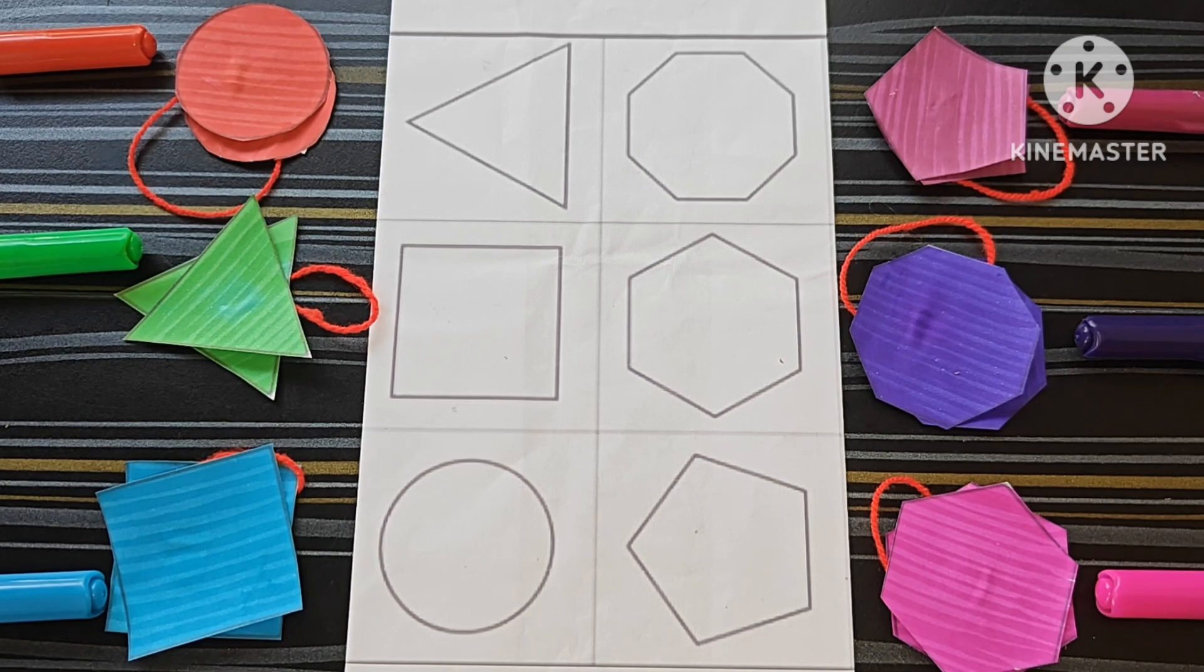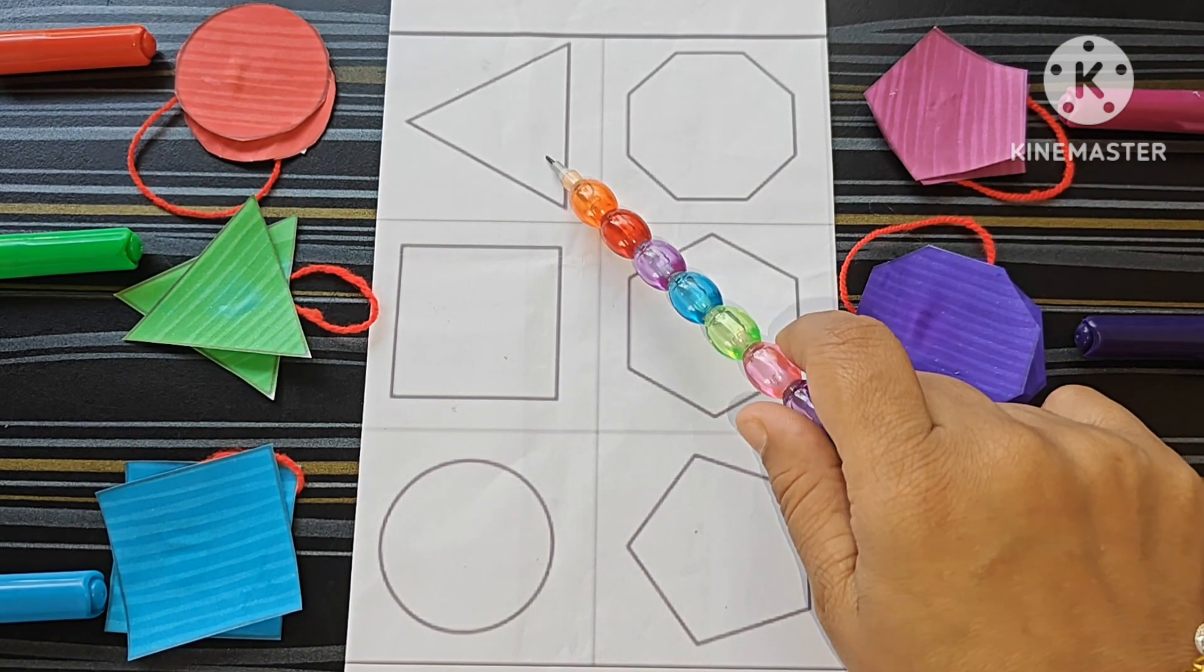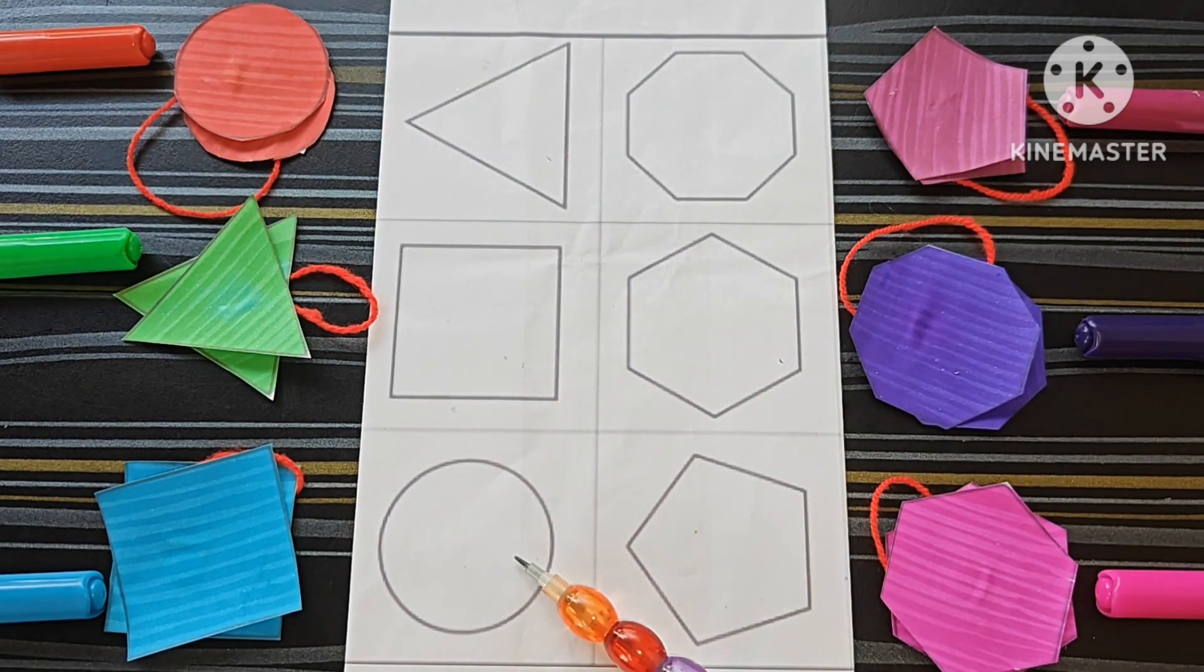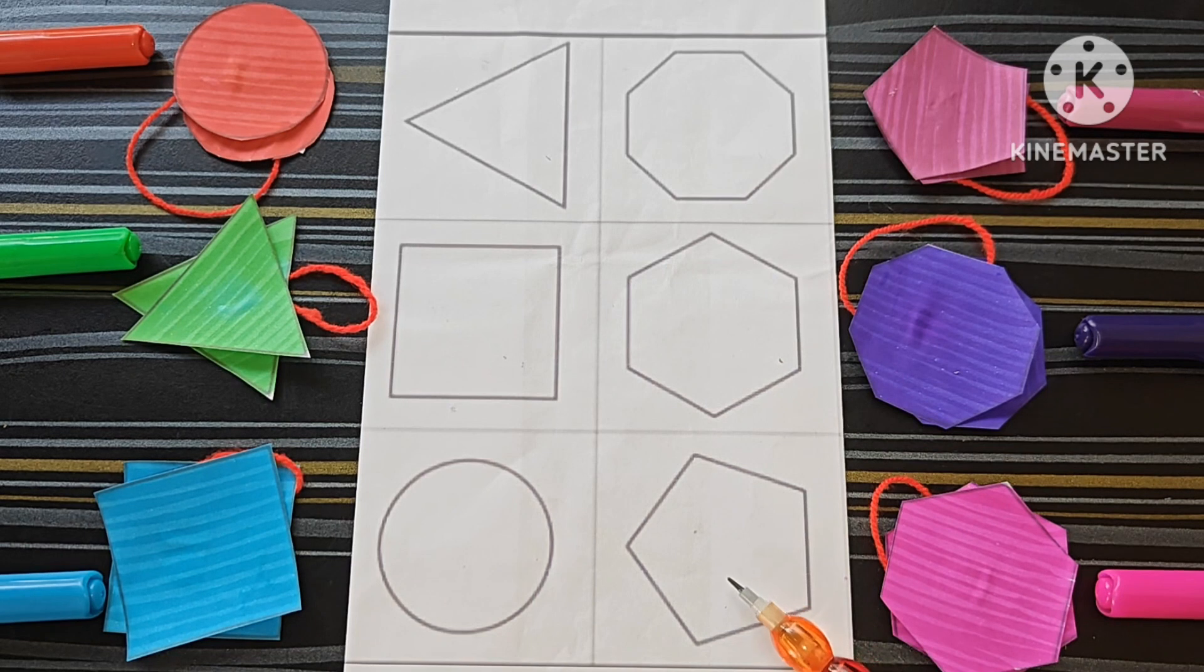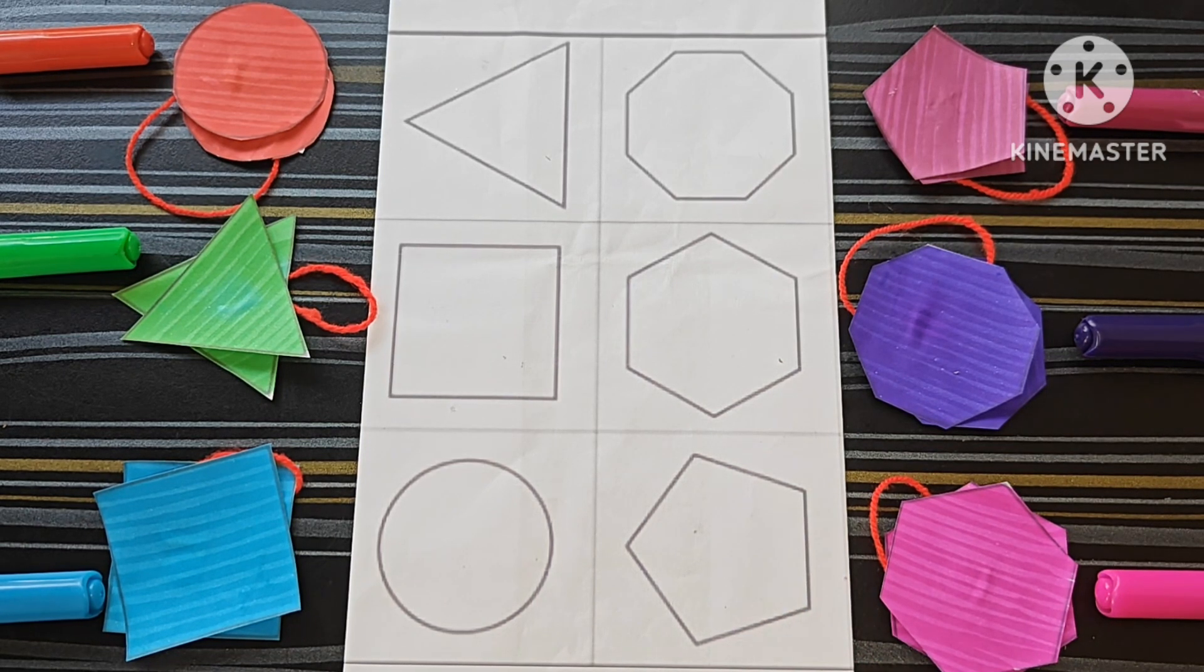We will know about the different shapes, so let's start. This is triangle, square, circle, octagon, hexagon, this is pentagon. Now let us know about the colors.